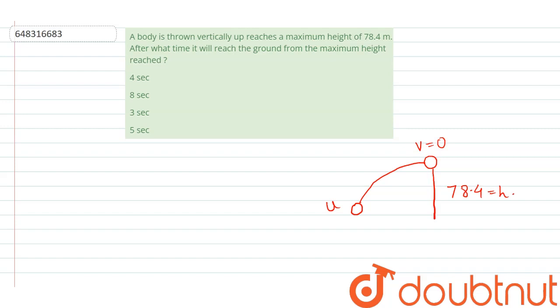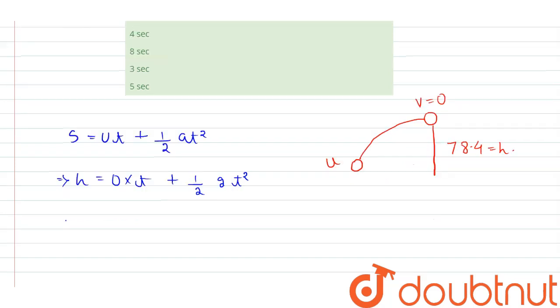Here s equals h, and u is equal to zero. At maximum height, the equation becomes s = 0×t + (1/2)gt². The height value is given as 78.4 = (1/2)×